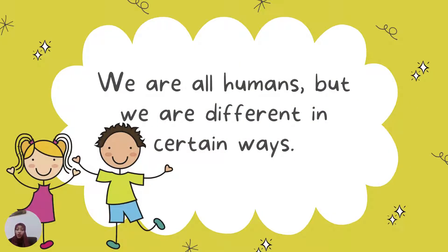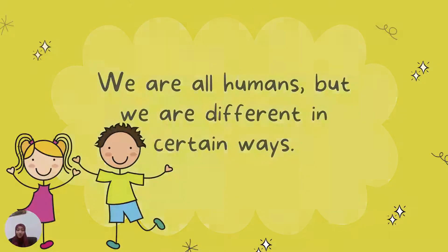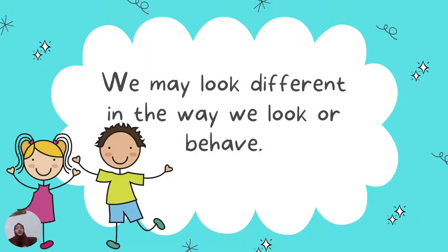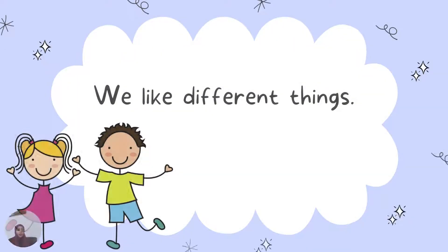So, we are all humans, but we are different in certain ways. We look different in the way we behave. We may look different in the way we look — for example, I have black hair, she has yellow hair; I have brown skin, she has white skin. I like to play football, she likes swimming more. So we are different in the things that we like, in the way that we look and behave, and we also like different things.